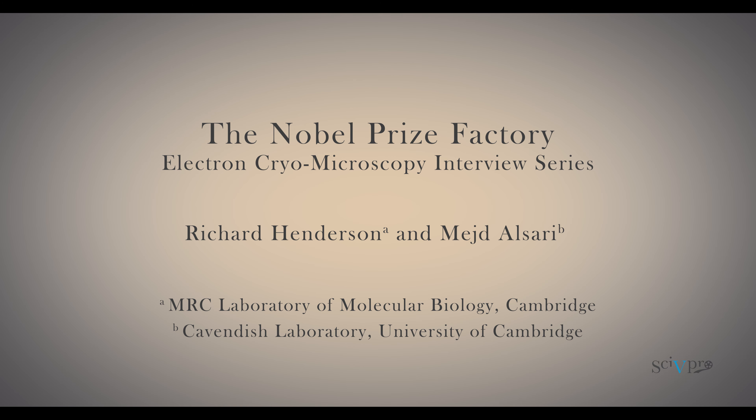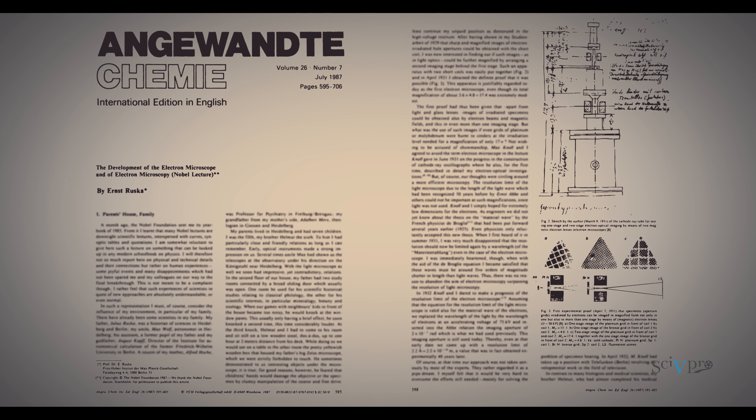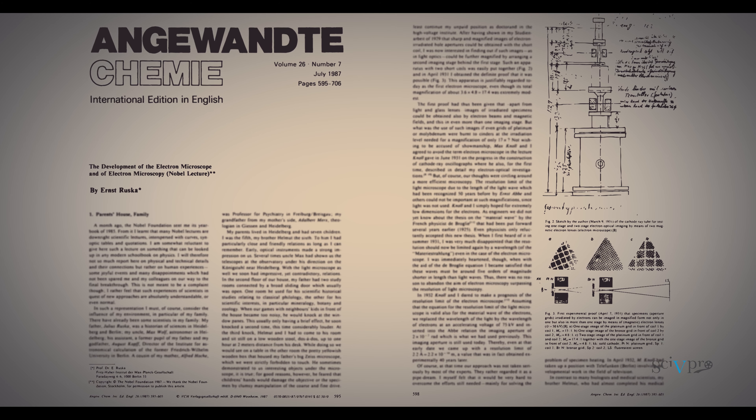What is cryo-EM in a nutshell? Of the three principal methods in structural biology, electron microscopy itself started about 1930 when it was realized you could focus electrons and make images just like you do with light. The first lenses were developed in the 1930s. The difficulty with electron microscopy is that electrons only pass through a vacuum — if you have them in air, they scatter and the image would be very blurry.